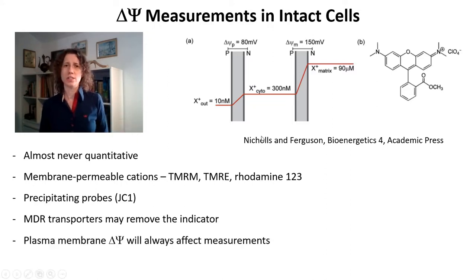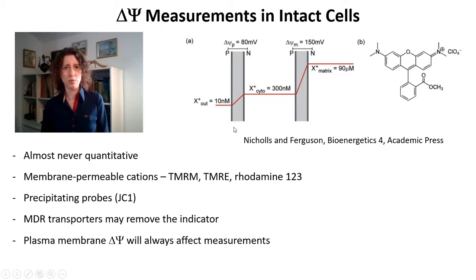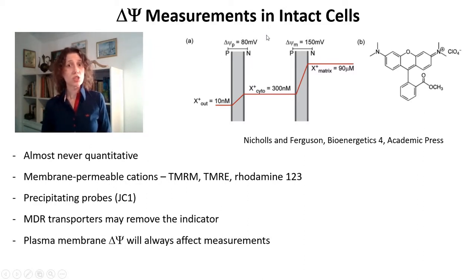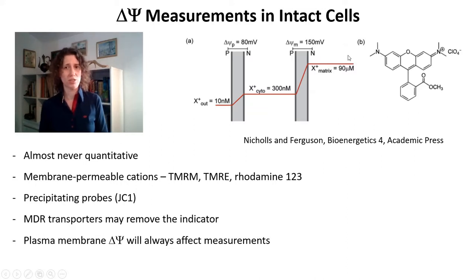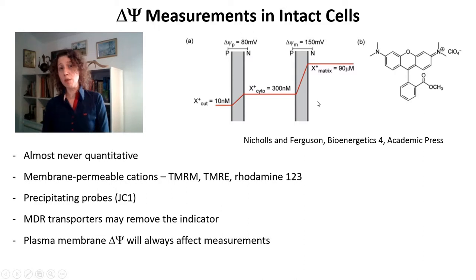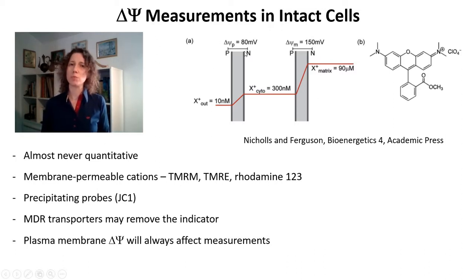Mostly, I really want to stress that the plasma membrane potential is also going to affect your results always. Because if the mitochondrial inner membrane potential leads to the accumulation of these probes, the concentration of these probes in the cytosol is dependent on the plasma membrane potential. So if you have a plasma membrane potential of 80 millivolts, you're going to have around 30 times more probe inside the cytosol than outside the cell. So whenever you're working with intact cells, you're measuring both membrane potentials at the same time, and you always have to remember that your plasma membrane potential may be changing.